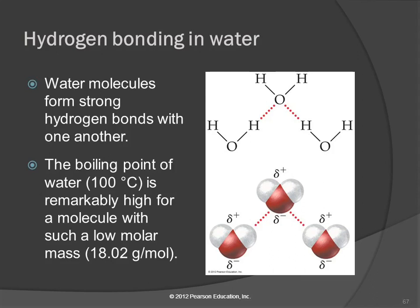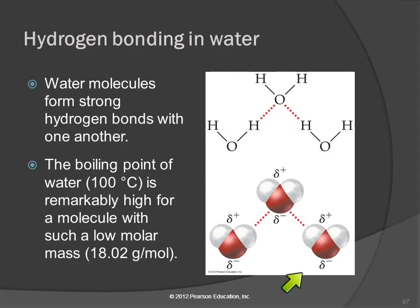Water (H2O) has O–H bonds and is a polar molecule, so it exhibits hydrogen bonding. In illustrations, the hydrogen bonds between water molecules are shown with dotted lines. One water molecule can hydrogen bond to more than one neighboring molecule simultaneously, creating an extensive network of intermolecular interactions.